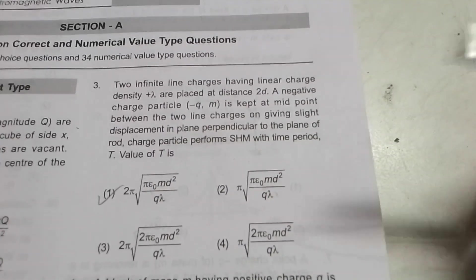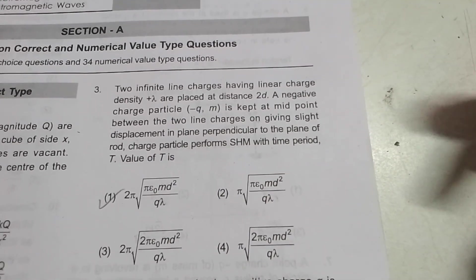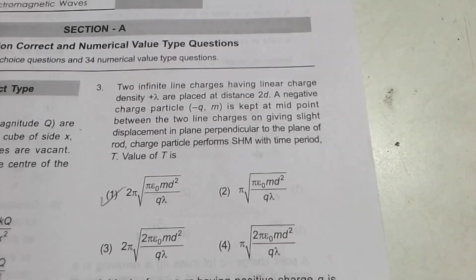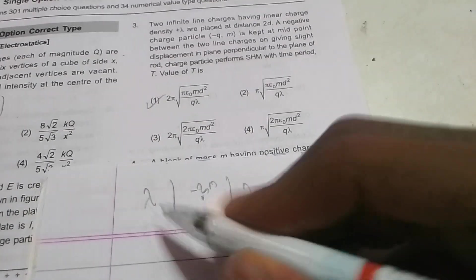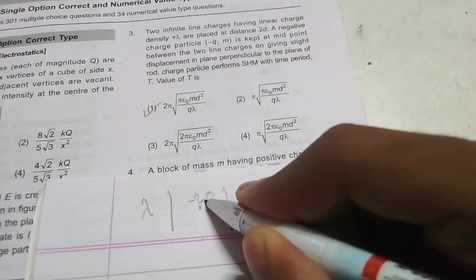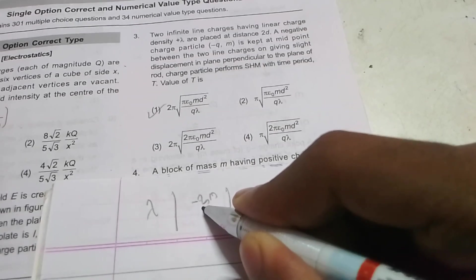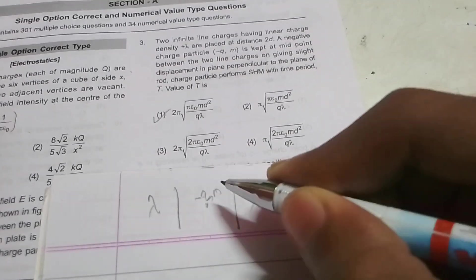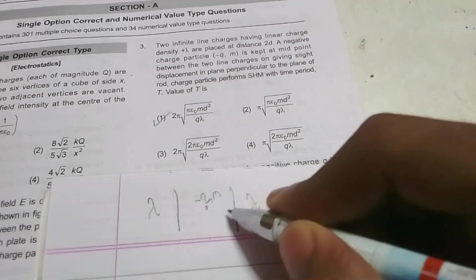Look at the marvelous question and give it a try by pausing the video. We are given two wires of density lambda and a charge at midpoint of it, and they have displaced it perpendicular to the plane of rod.